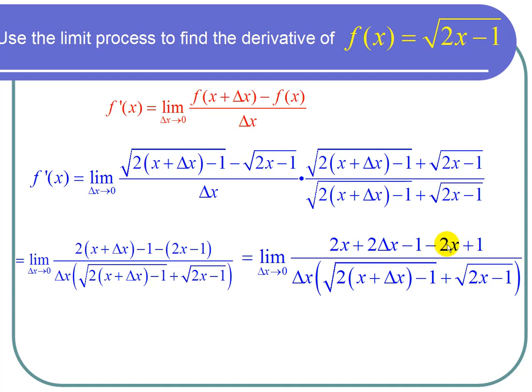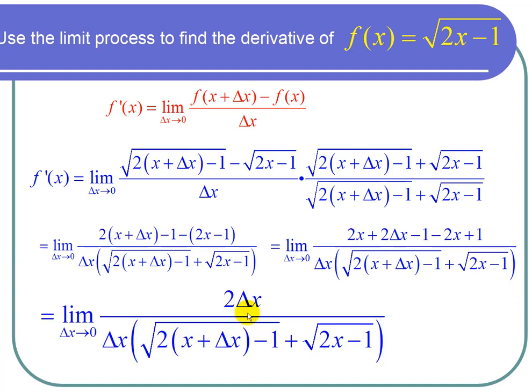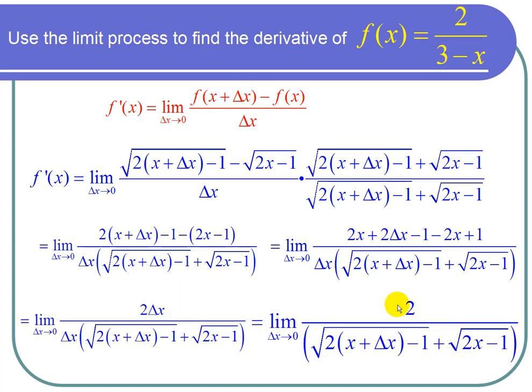So now I have a delta x up on top, a delta x down the bottom, I can cancel those. And I'm left with the limit as delta x approaches 0 of 2 over the square root of 2 times x plus delta x minus 1 plus root 2x minus 1.